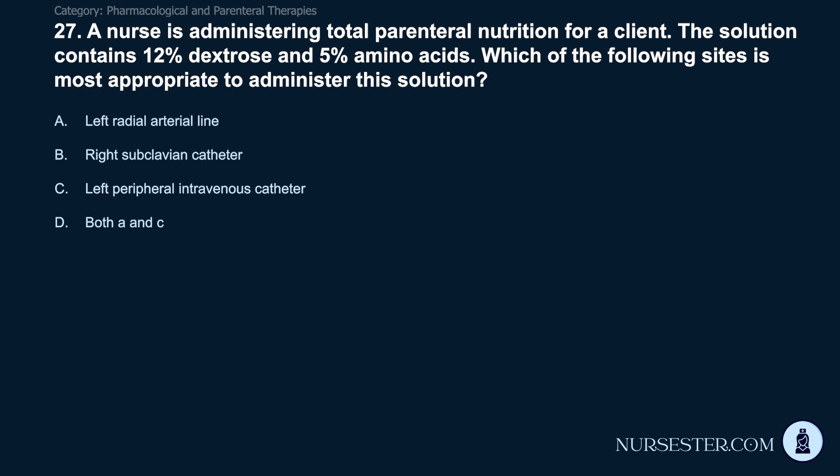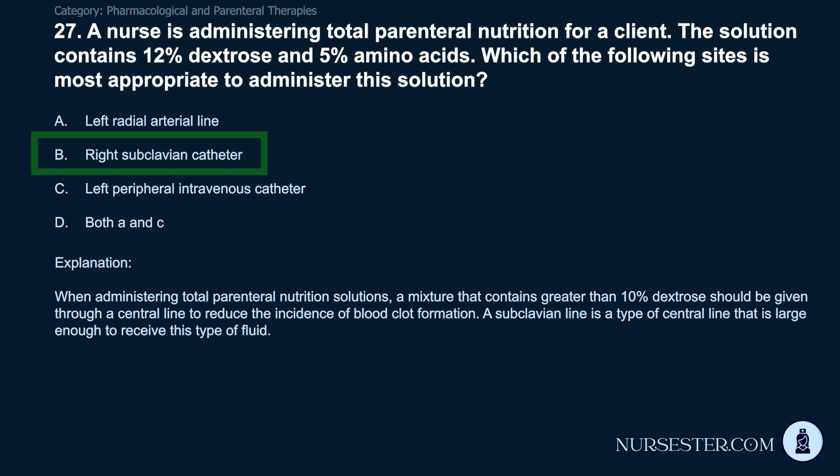Question 27: A nurse is administering total parenteral nutrition containing 12% dextrose and 5% amino acids. Which site is most appropriate? A) Left radial arterial line. B) Right subclavian catheter. C) Left peripheral IV catheter. D) Both A and C. Correct answer: B. Right subclavian catheter. When administering TPN solutions with greater than 10% dextrose, the solution should be given through a central line to reduce the incidence of blood clot formation. A subclavian line is a type of central line large enough to receive this type of fluid.